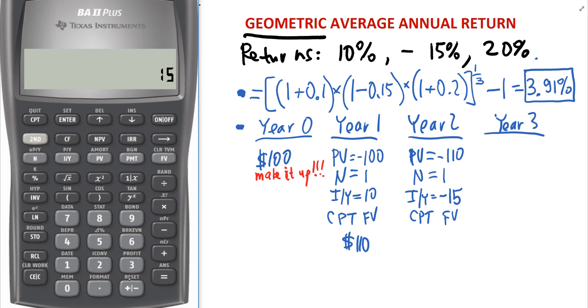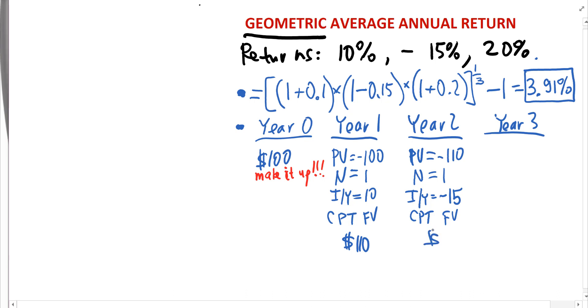I'm doing 15, then plus minus, then IY. And I'm computing future value. And as expected, because of the negative return, the price should be less than 110 dollars. It's now 93 dollars and 50 cents. Okay. 93 dollars and 50 cents is the new price.